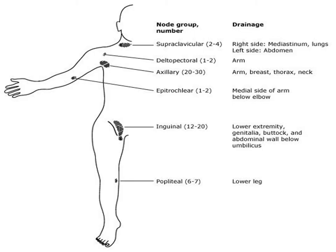Regarding clinical examination, the most palpable lymph nodes present all over the body are the cervical, supraclavicular, axillary, epitrochlear, inguinal, and the popliteal lymph nodes.